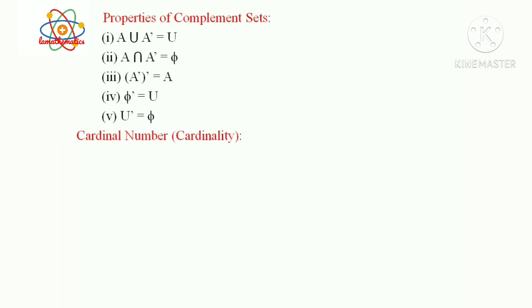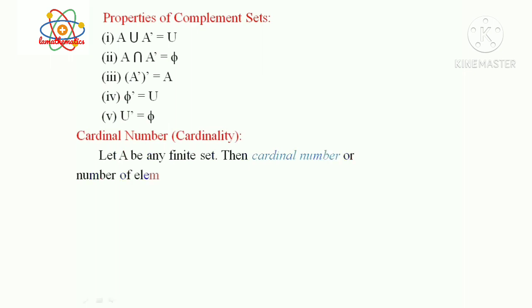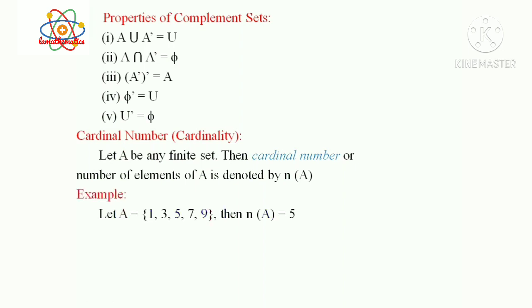Cardinal number or cardinality: Let capital A be any finite set. The cardinal number, or number of elements of capital A, is denoted by n(A). For example, if A equals {1, 3, 5, 7, 9}, then the number of elements in A is 5.